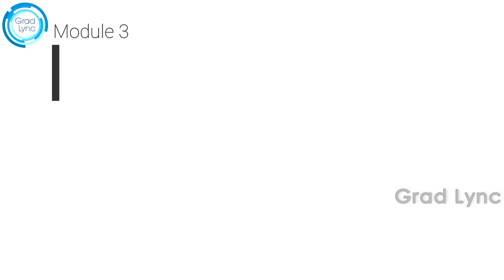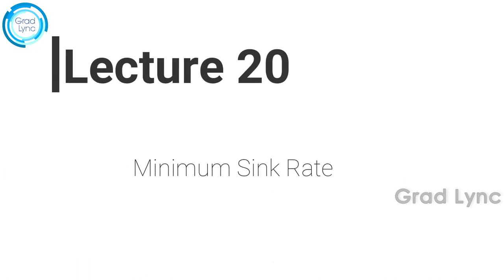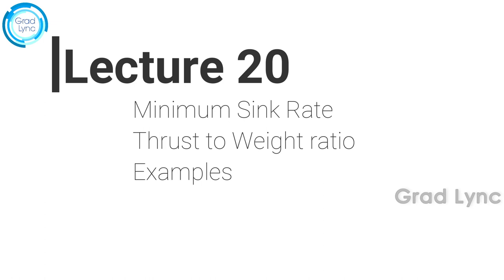Hi friends, I welcome you back to this lecture series on aircraft performance. In the last class, we understood something called gliding flight. A gliding flight is one where both the engines are switched off and the aircraft glides by itself. We also understood what happens as the airplane glides from one altitude to another altitude with the help of an example.